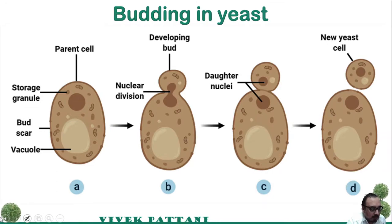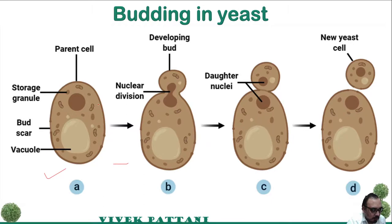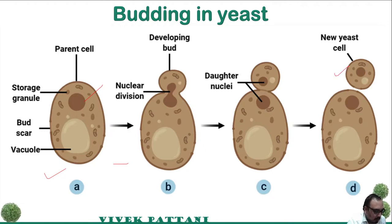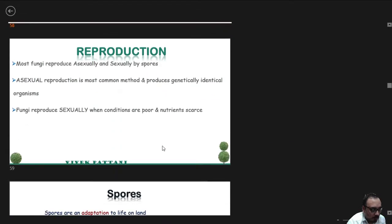Now the reproductive structures: budding in yeast. A parent cell which contains storage granules — in the next stage a nuclear fusion occurs, then the nuclei divide, a daughter nuclei is formed, and finally a new cell is released into the media. I am going to end my lecture; please join the Webex session.